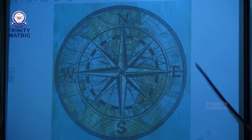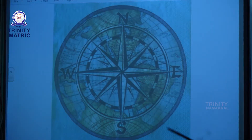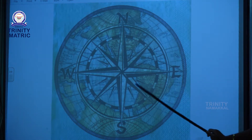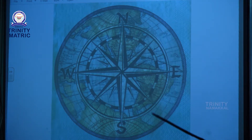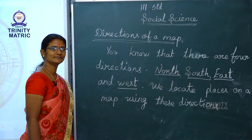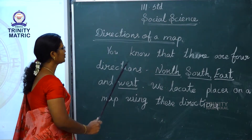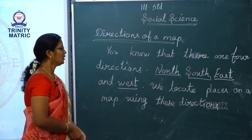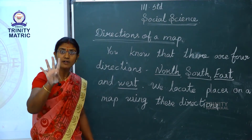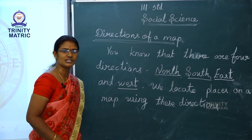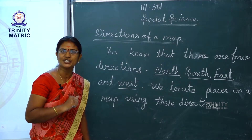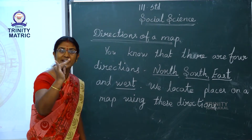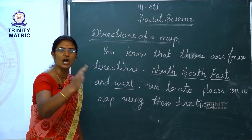We can find direction by using a compass. There are four directions: East, West, North and South.